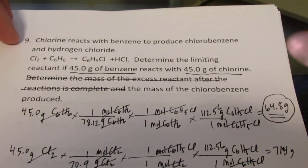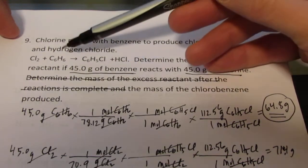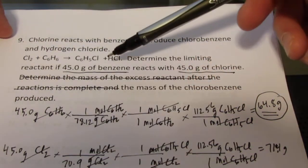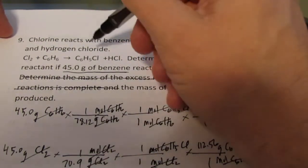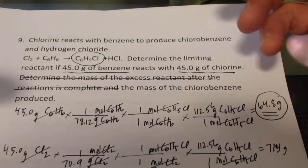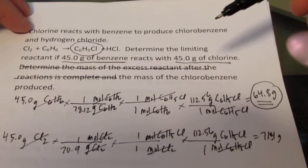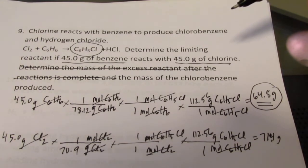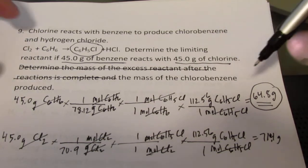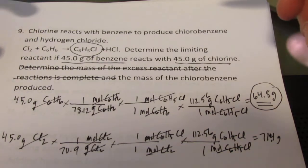Now I can identify number nine as a limiting reactant problem. As I read through it, I give you 45 grams of benzene, which is one of my reactants, and 45 grams of chlorine, which is the other. So I'm giving you the mass of two reactants, and asking you how much of the chlorobenzene I can produce. Now if you remember, the way we do this is we do the stoichiometry twice, and we pick the answer that can produce the smallest amount of product.